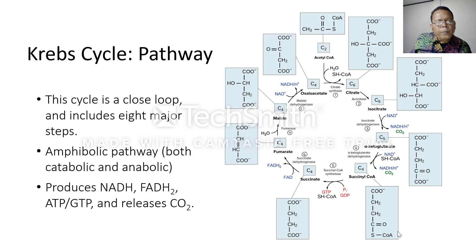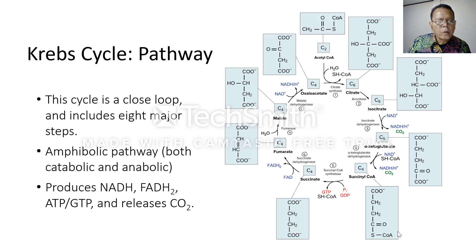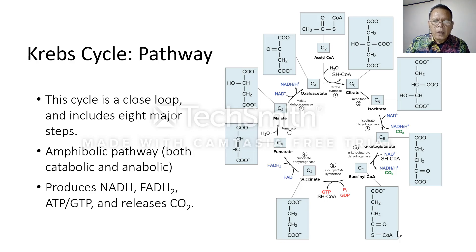Now let's look at the Krebs cycle pathway. This cycle is a closed loop and includes several major steps. The cycle produces NADH, FADH2, ATP or GTP, and releases carbon dioxide.